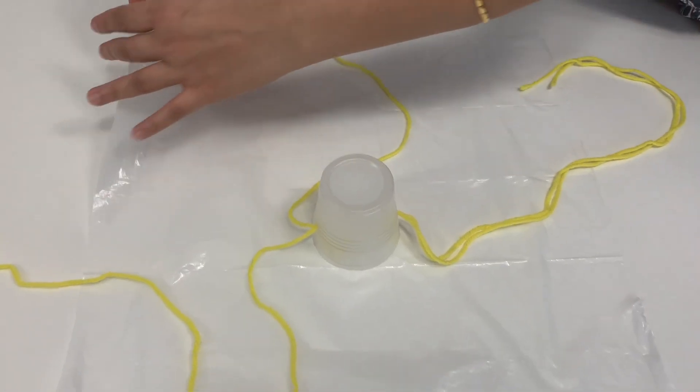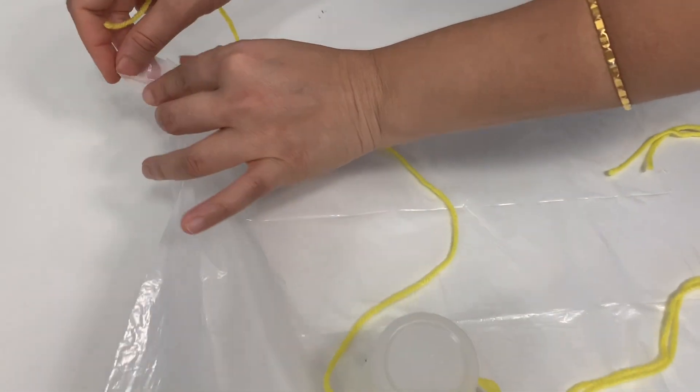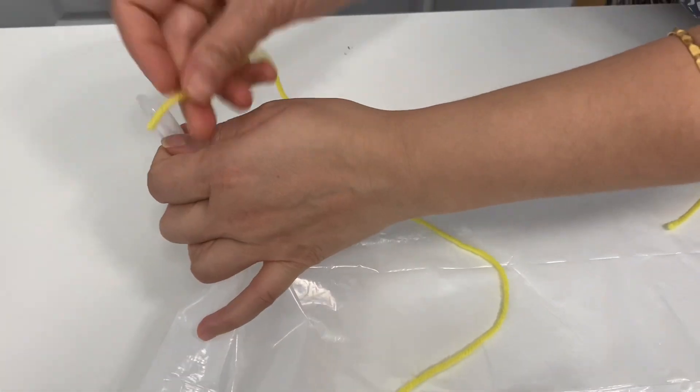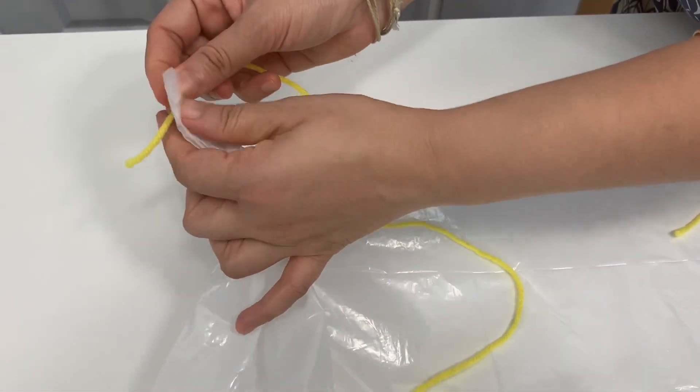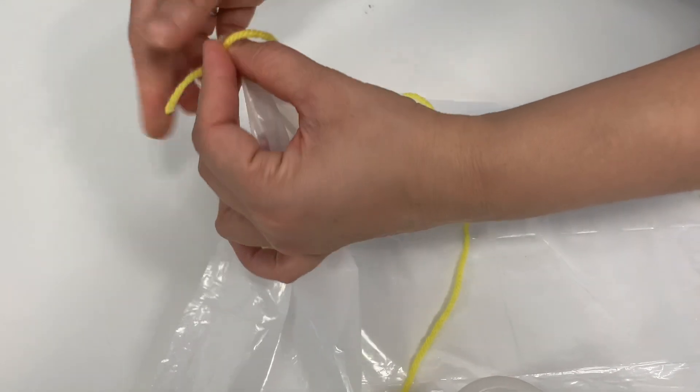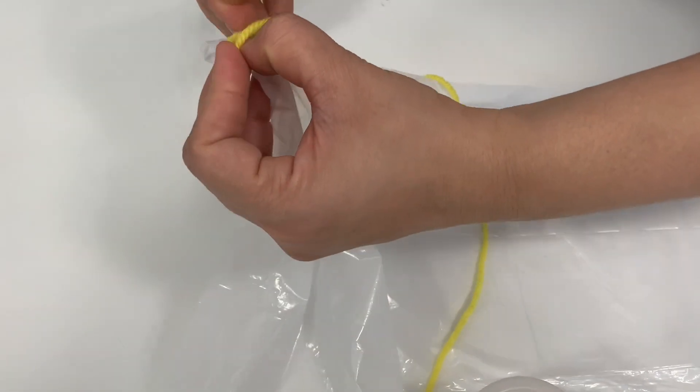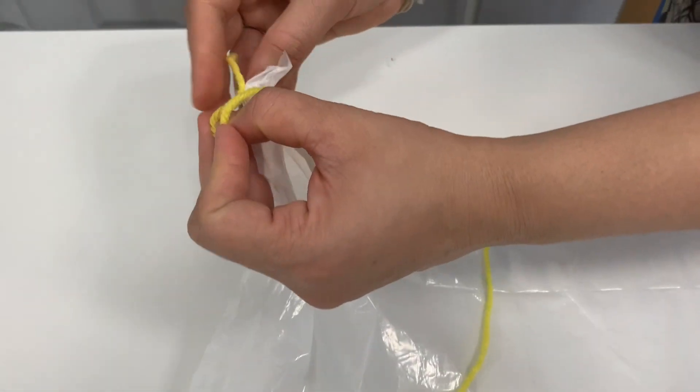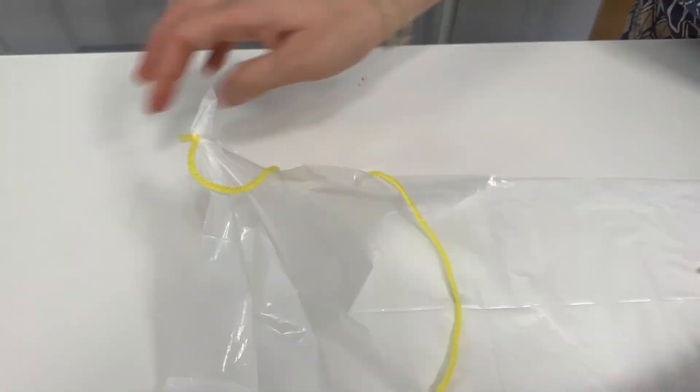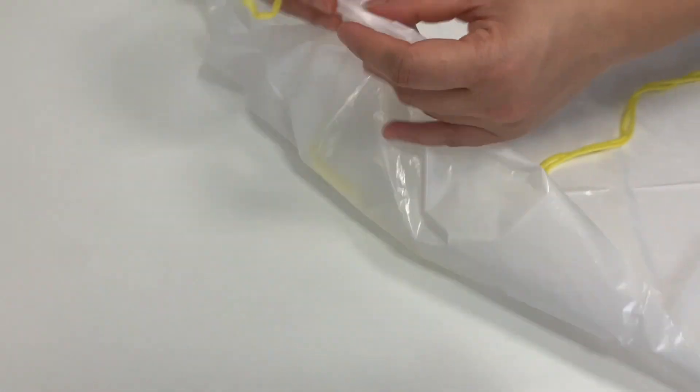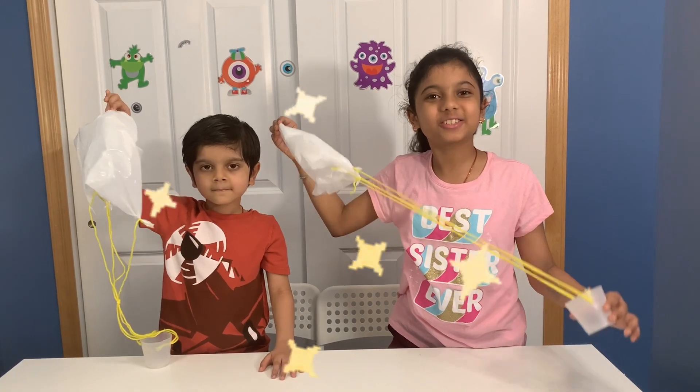Take one string and tie it to a corner of the plastic bag. Do that to all four sides. Now our parachutes are ready!